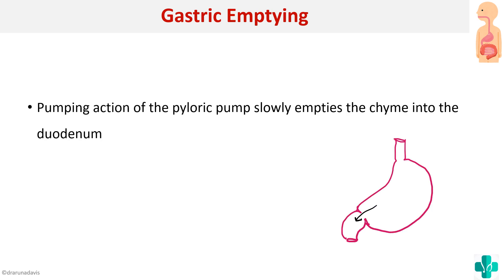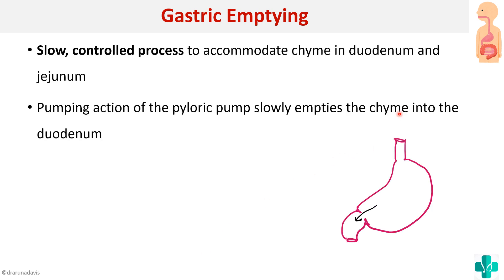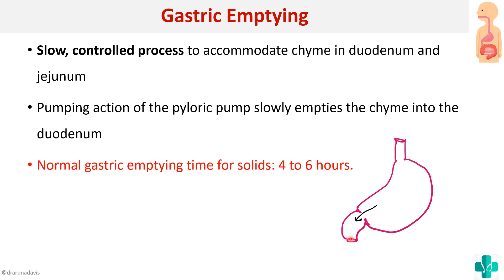First, what is the definition of gastric emptying? After food passes through the esophagus it reaches the stomach, where gastric motility mixes the content with acids and grinds them into smaller particles. It is then sequentially squirted into the duodenum. This slow, controlled process by which chyme is transferred into the duodenum and jejunum is called gastric emptying, and it mainly occurs by the pumping action of the pylorus. The gastric emptying time for solids is around 4 to 6 hours.